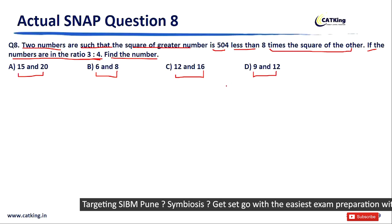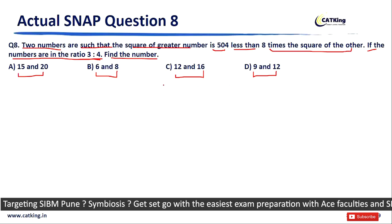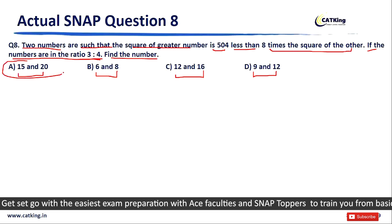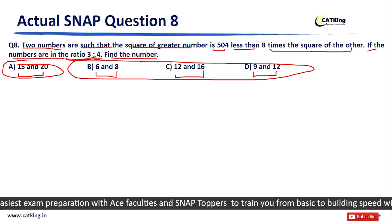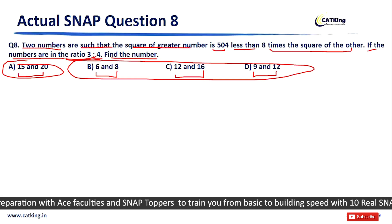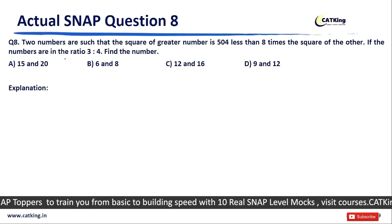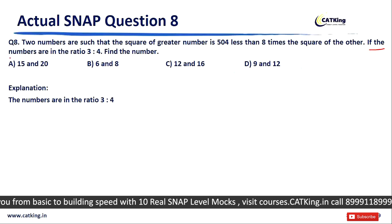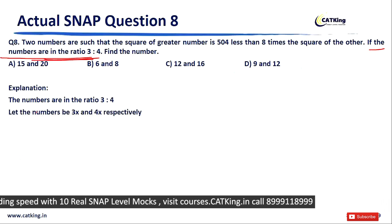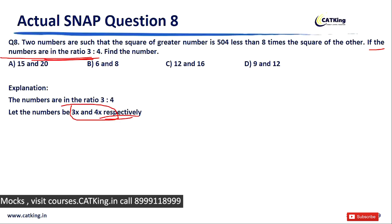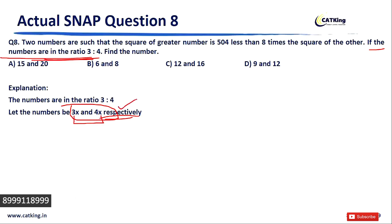Pause the video and try to solve this. If not, you can use the options, but that's a worst-case scenario. The right approach: since the numbers are in the ratio 3:4, assume them as 3x and 4x respectively — this keeps the ratio intact.